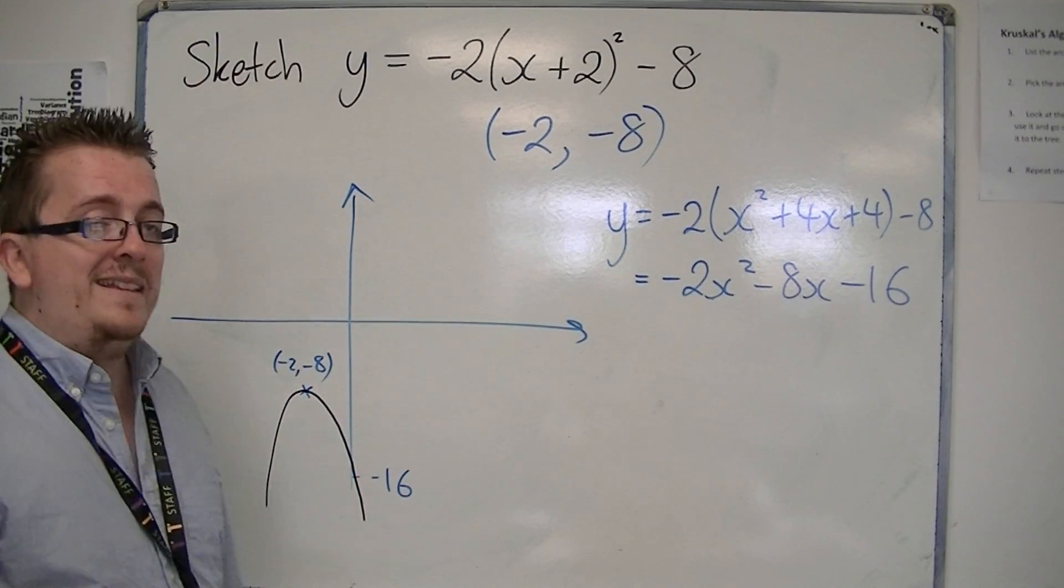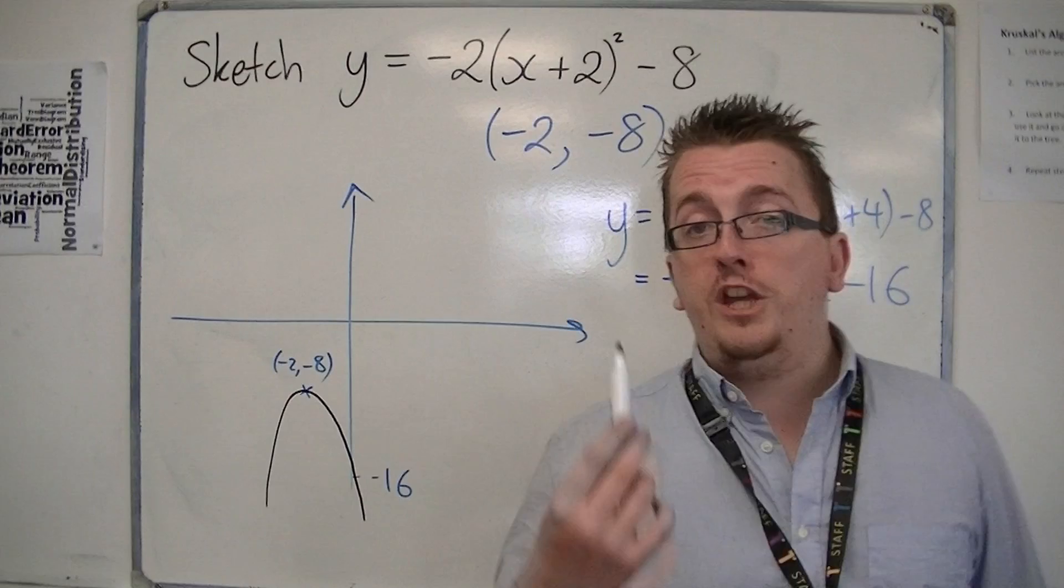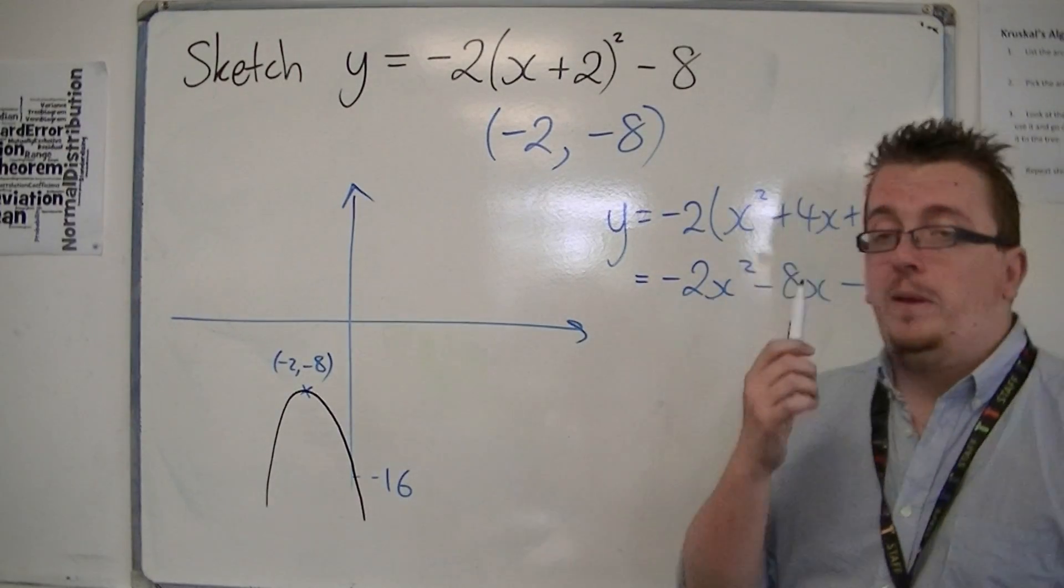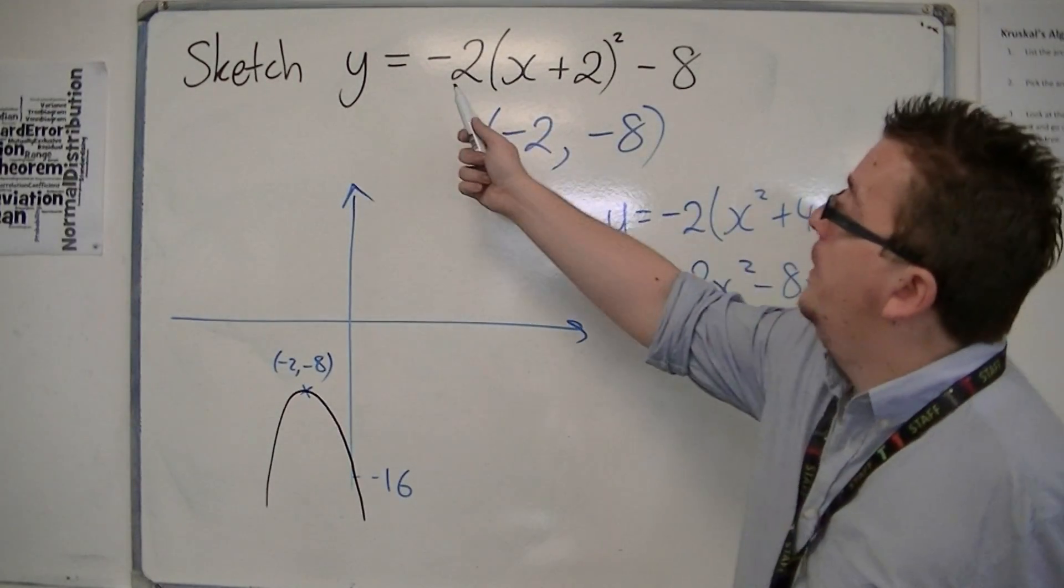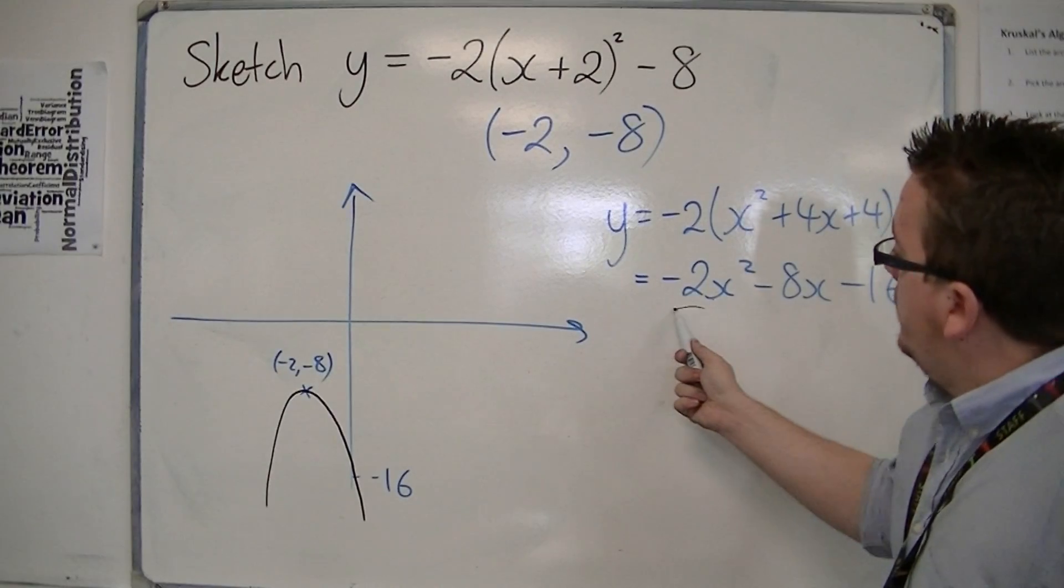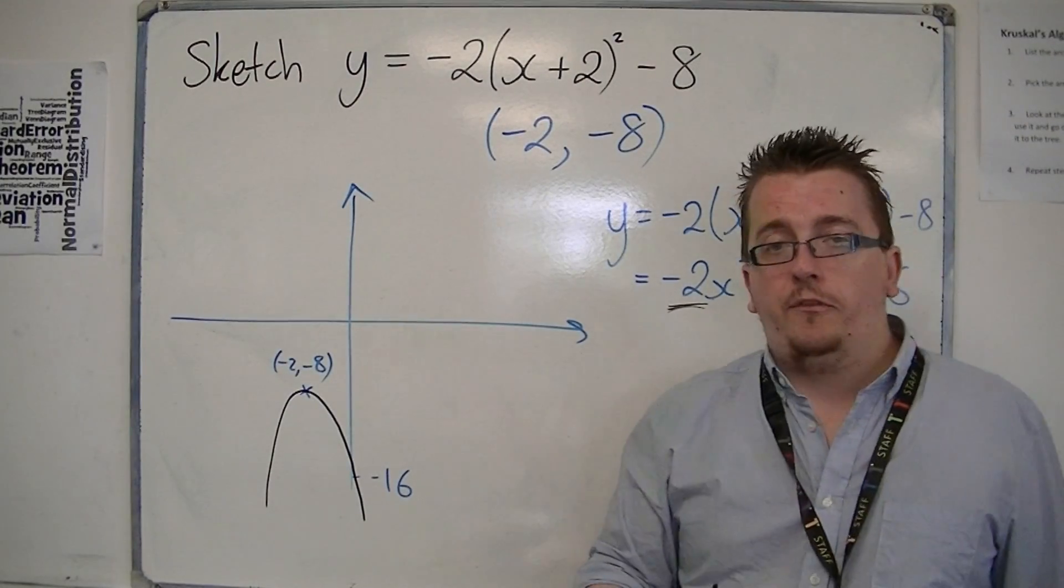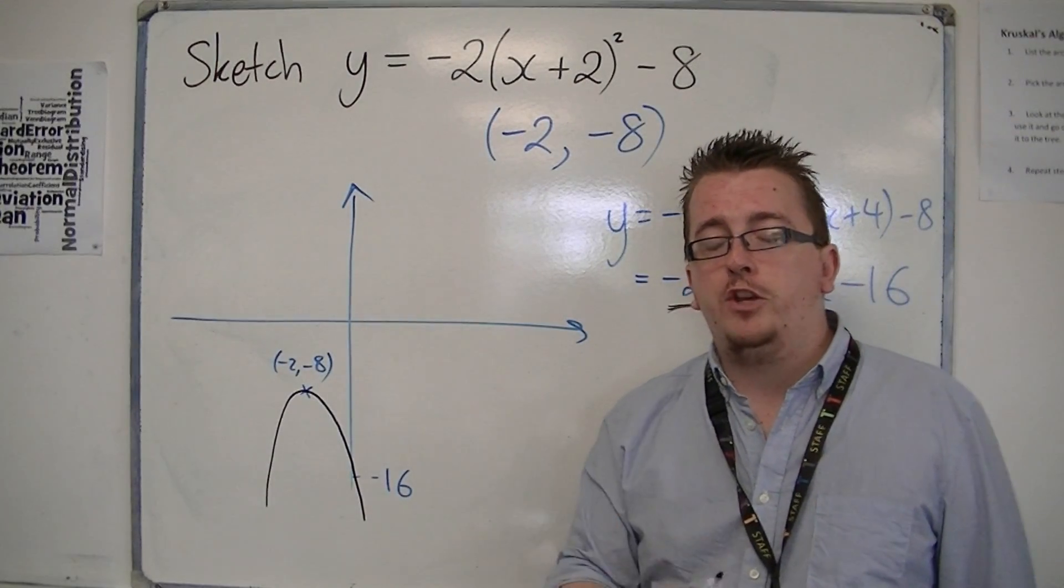So it is actually upside down to what we would usually be sketching, and it is because of the negative in front of the x squared. The negative sign reverses the direction of the parabola.